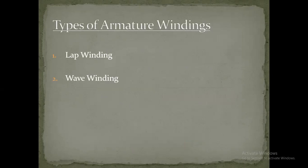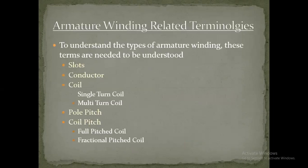Coming to the armature winding topic: armature windings are of two types — lap winding and wave winding. To understand the types of armature winding, certain terminologies need to be understood: slots, conductors, and coils. Slots are the spaces in which windings are placed, and conductors are the wires from which the winding is made.